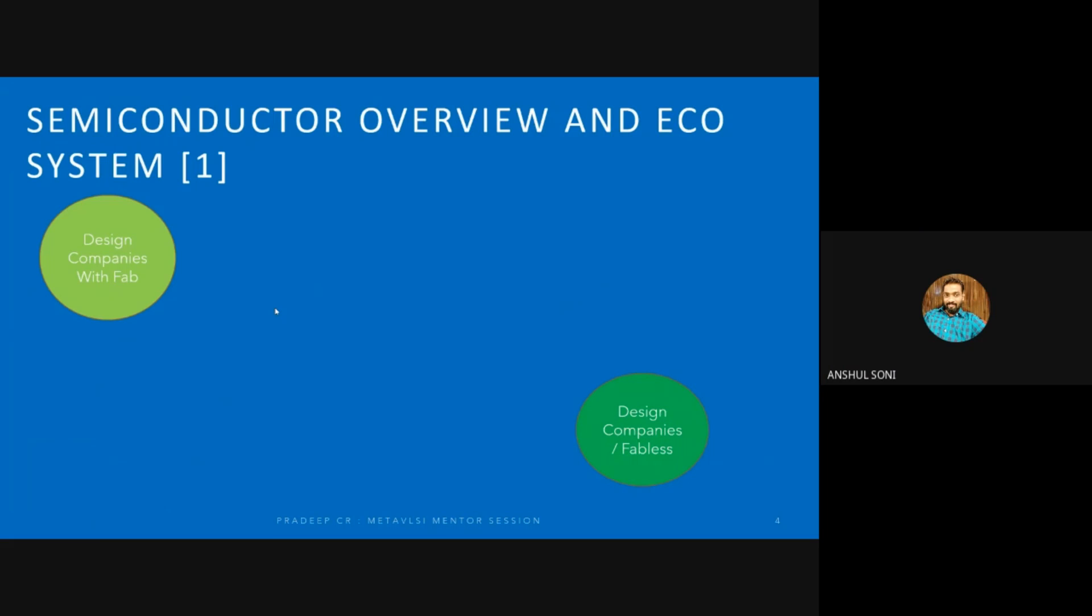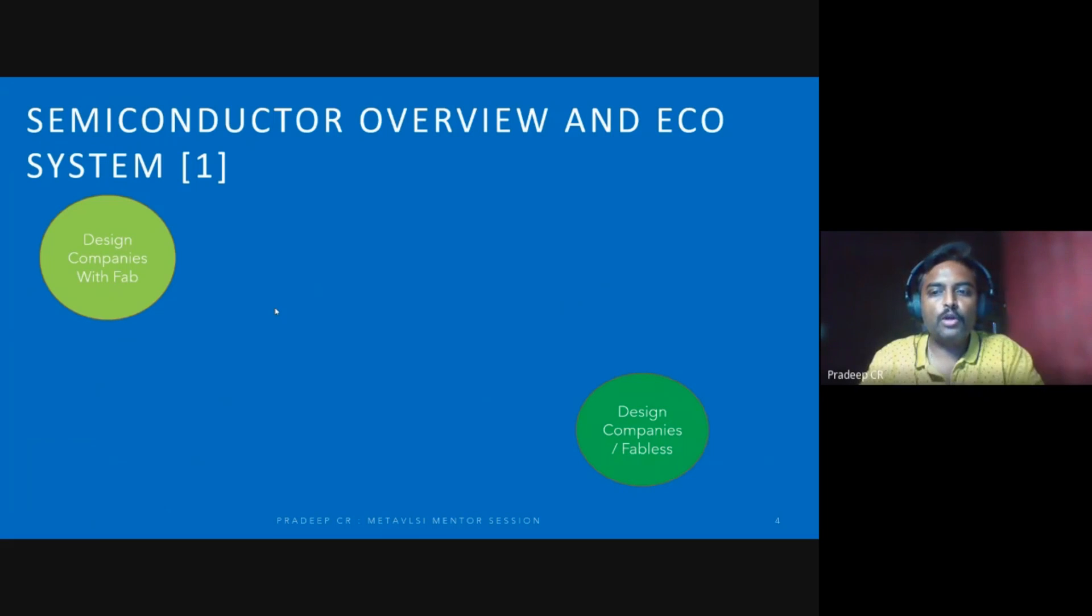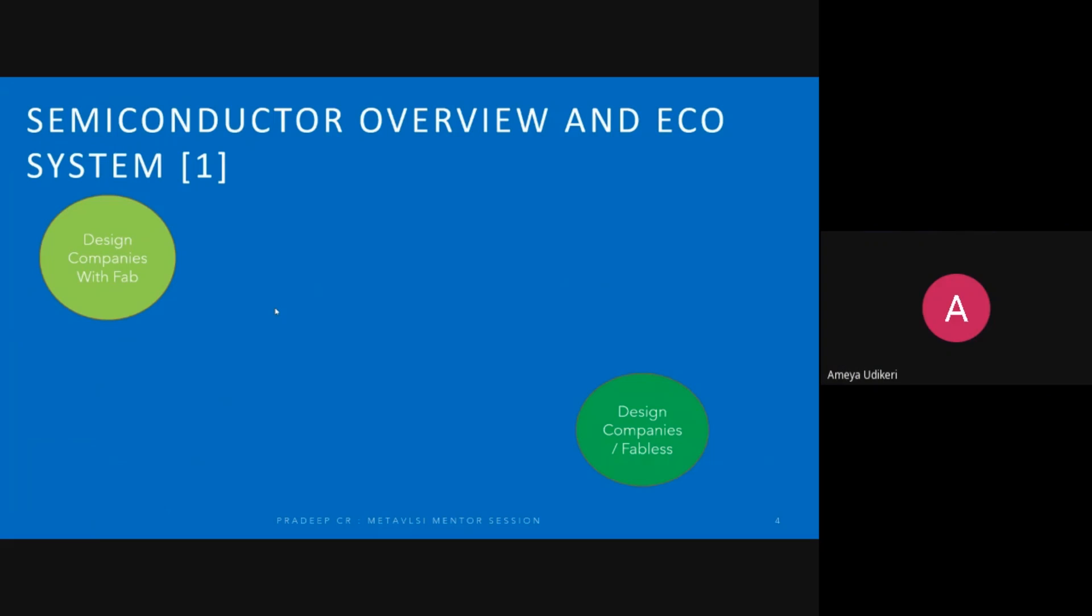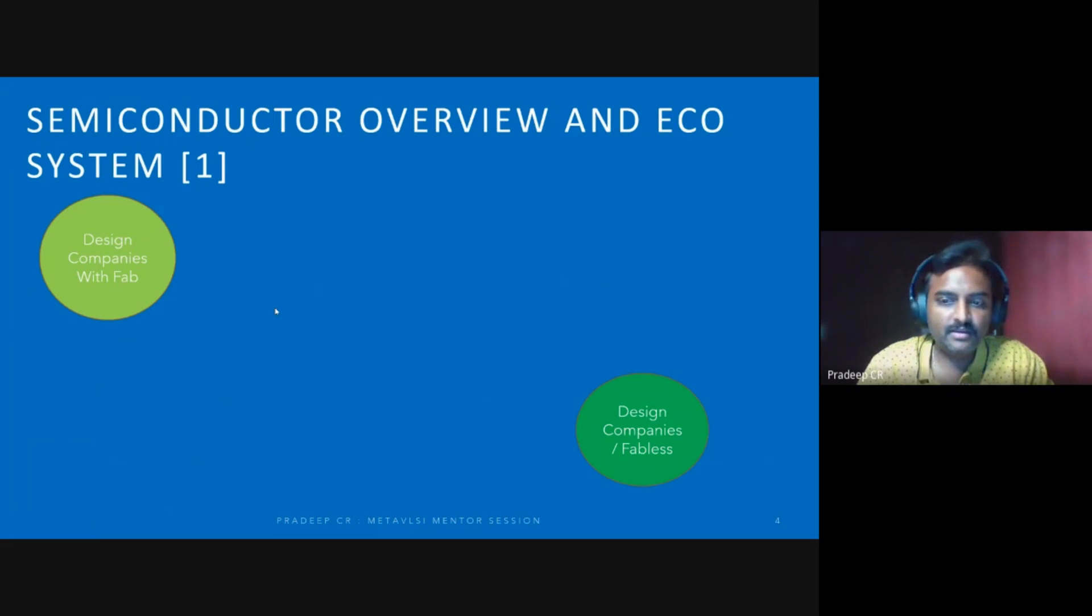TSMC is only fab actually, they don't have design. What about design companies - fabless - that is they don't have foundries, they only do designs. Many of you use smartphones where the processor comes from companies called Qualcomm, MediaTek - the Snapdragon or MTK chipsets. These are fabless companies - Nvidia - these are all fabless companies because they design but they don't have a foundry.